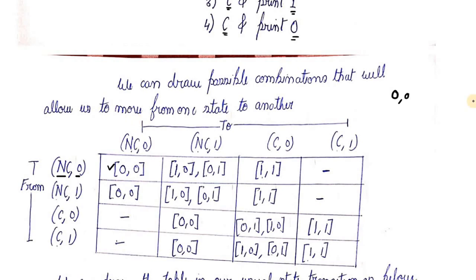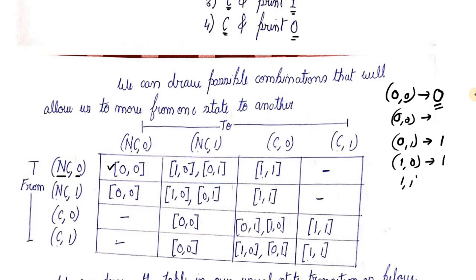If we initially had 0,0 which outputs 0 with no carry, and we need to land back in that state (no carry, print 0), we must input 0,0. If we put 0,1 the output is 1 with no carry; if we put 1,0 the output is 1 with no carry; if we put 1,1 the output is 0 with a carry of 1. So we fill the table with all possible cases. If we need to remain in no carry with state 0, we use 0,0.